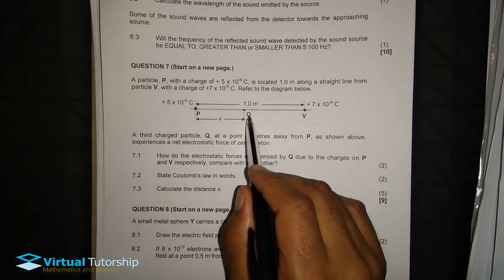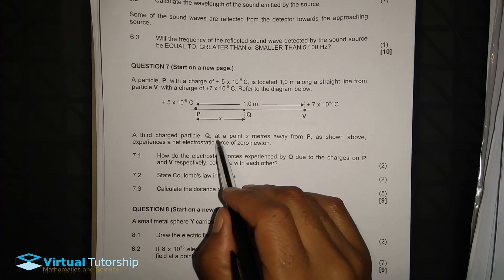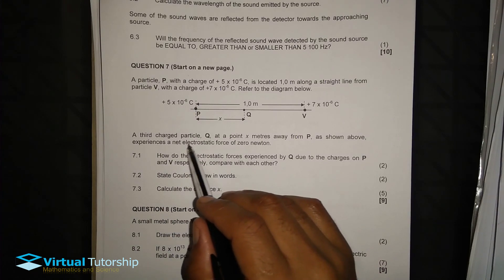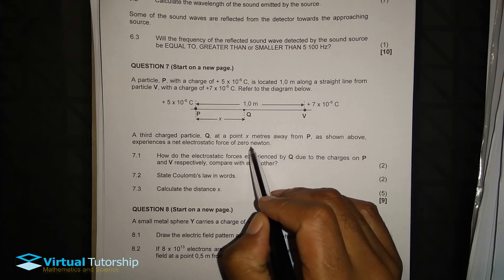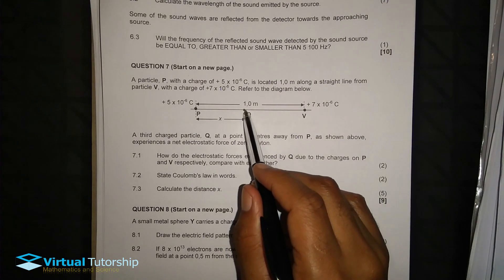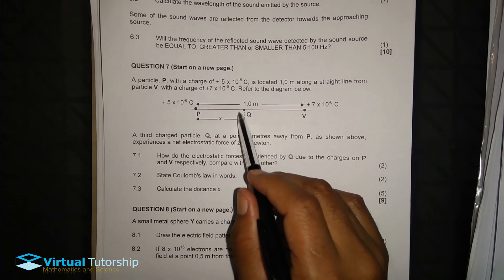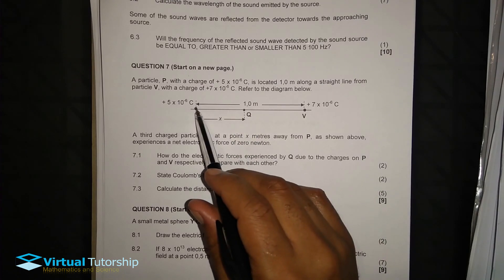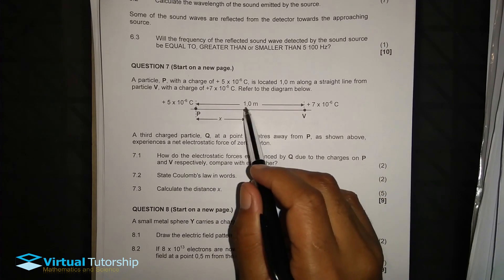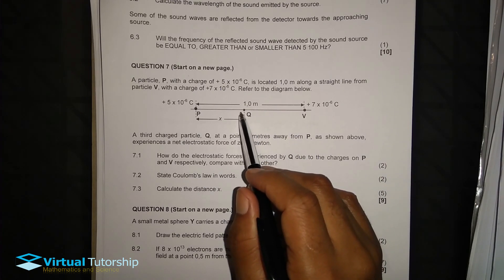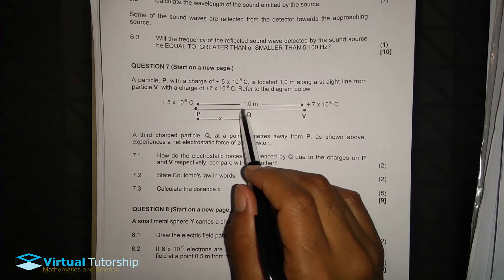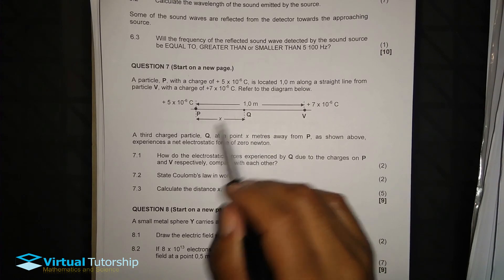At particle Q, the charge at Q at a point X meters away from P, as shown above, experiences a net electrostatic force of 0 Newton. So the force on Q being experienced, Q will experience a 0 Newton force at this point. Remember, P and V exert forces on Q, and the forces will have a value of 0 at point Q.